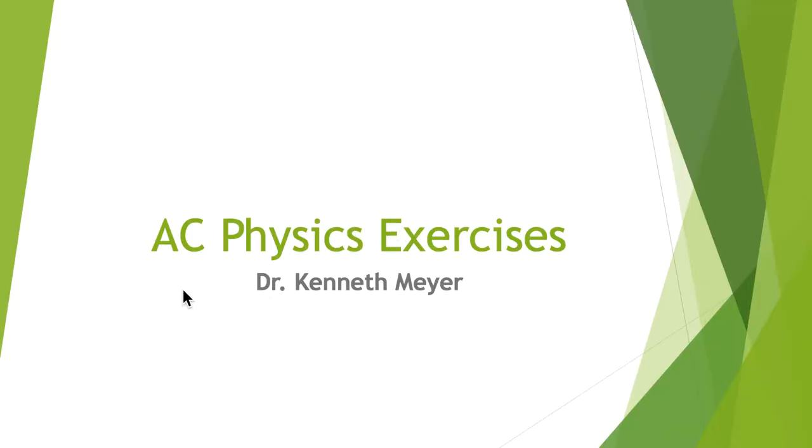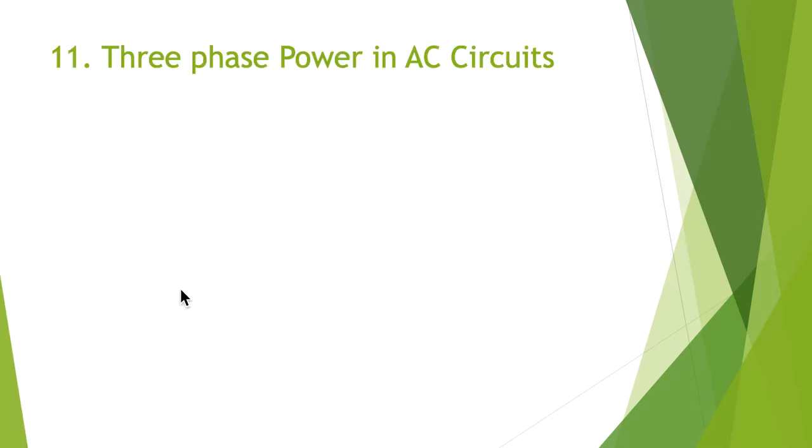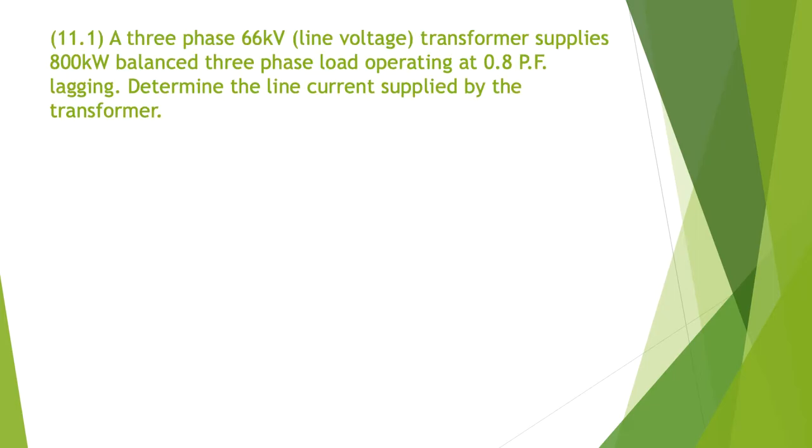AC physics exercises, and we're up to three-phase power and AC circuits number 11. Let's look at our first problem: a three-phase 66 kV line voltage transformer supplies 800 kilowatt balanced three-phase load at 0.8 power factor lagging. Determine the line current supplied by the transformer.